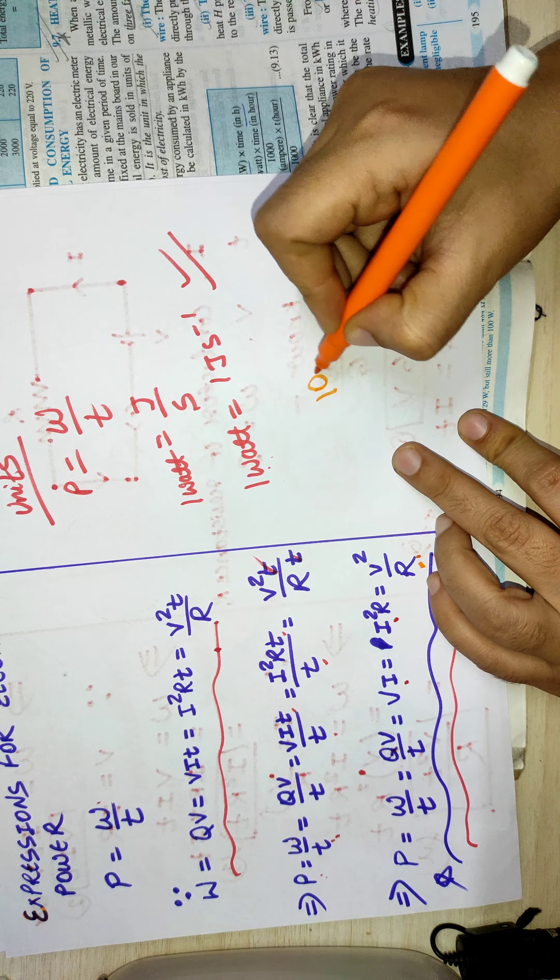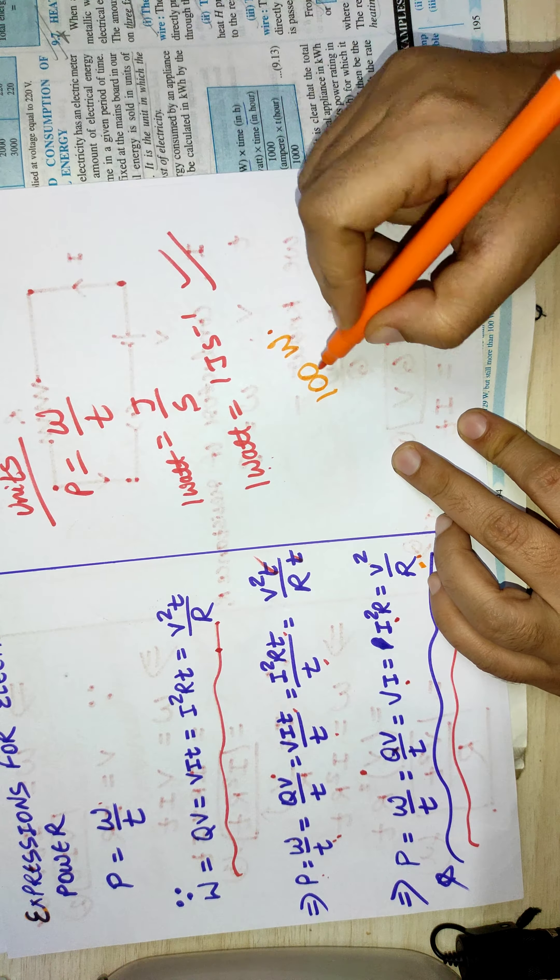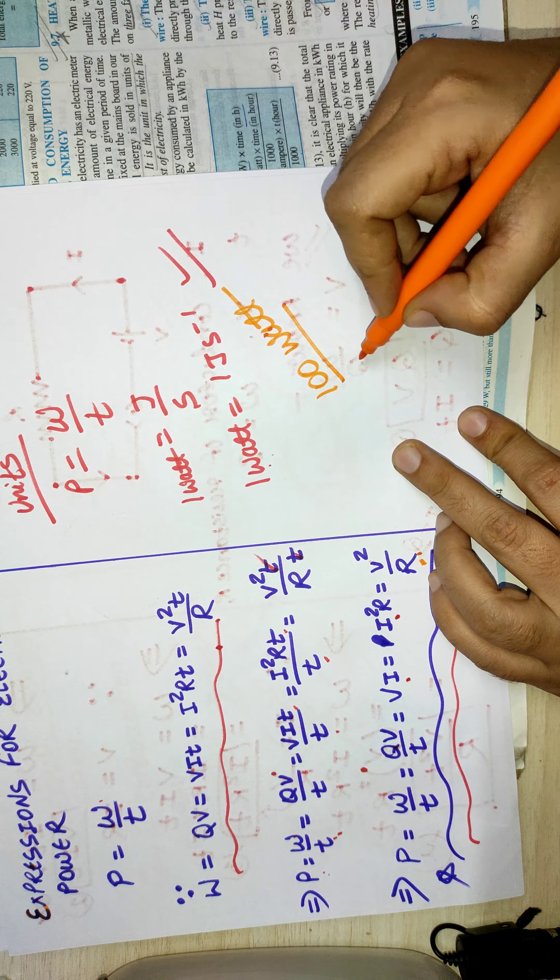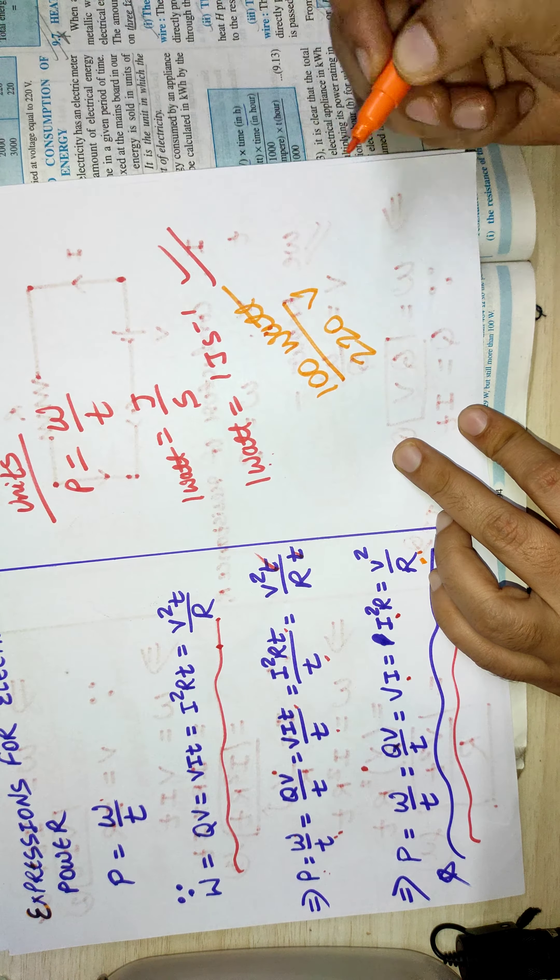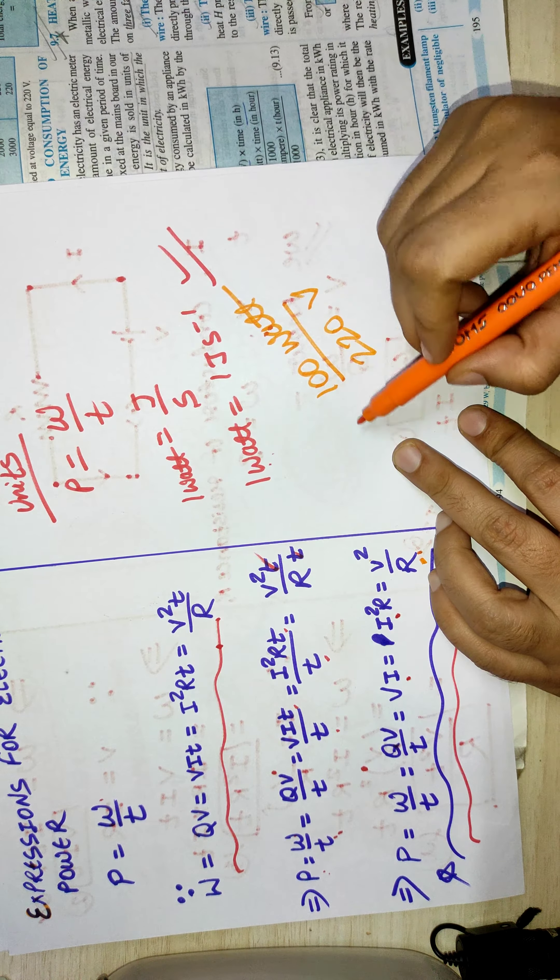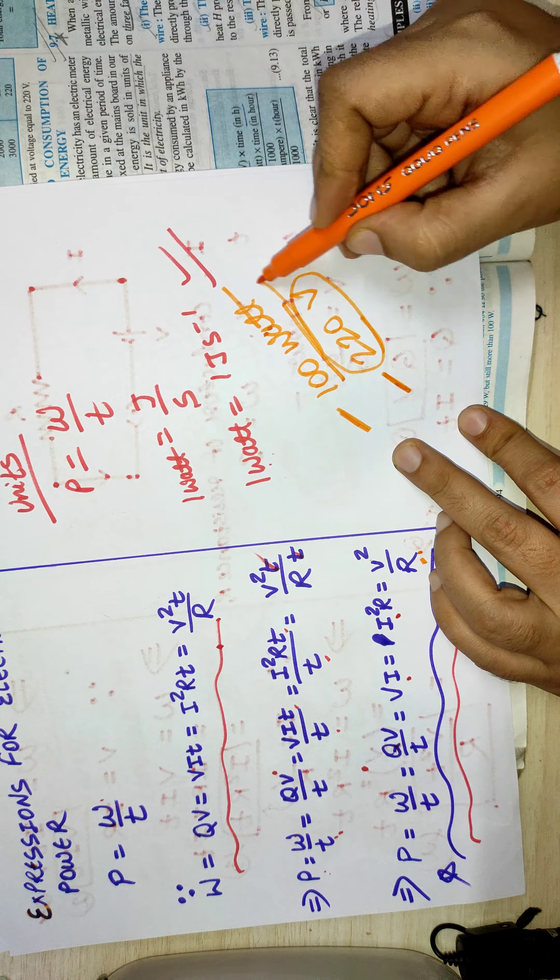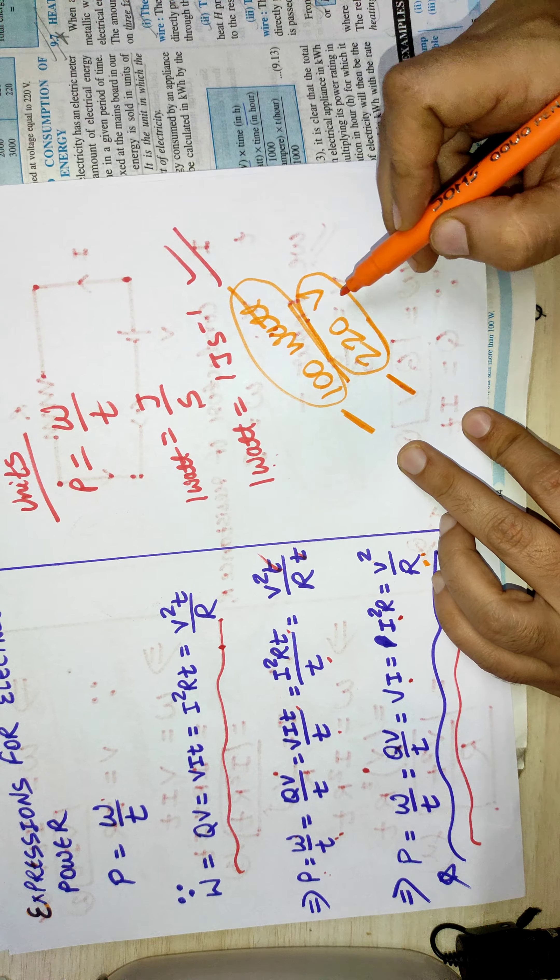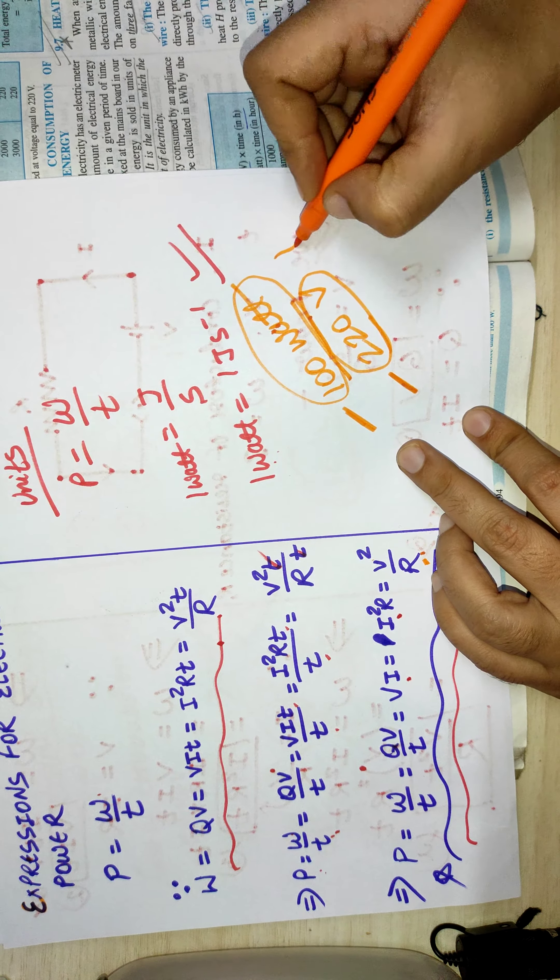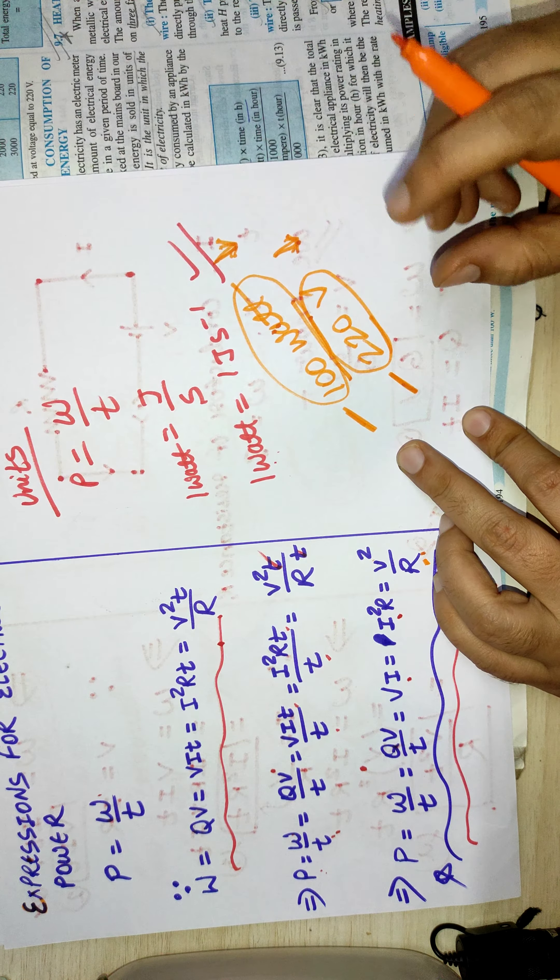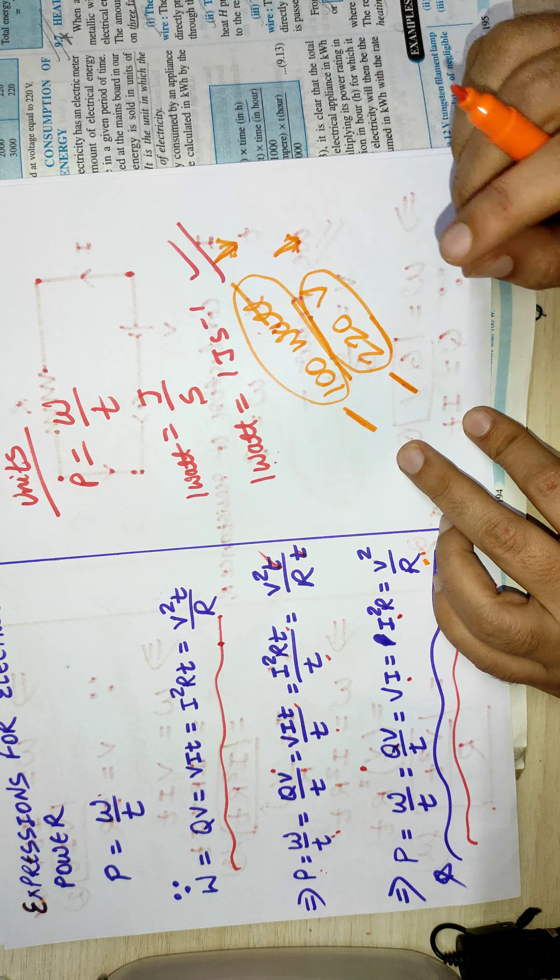Then one more thing you must understand: if the bulb is rated at 100 watt and its voltage rating is 220 volt, it means if the bulb is exactly connected at this voltage it will consume this much power. If the bulb is getting a voltage lower than this, then the bulb will consume less power and it will glow dimly.